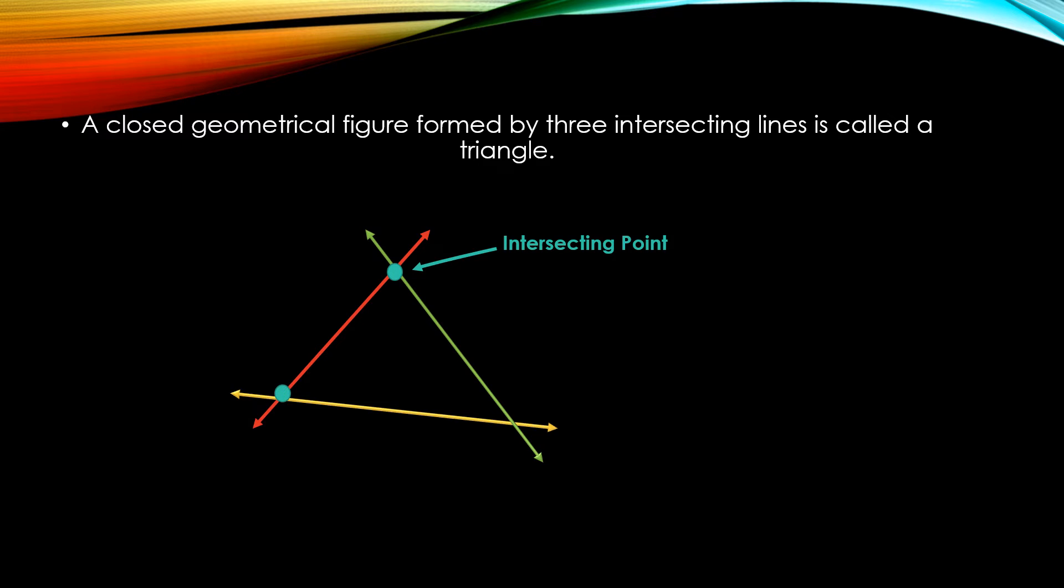Now, the red and yellow lines intersect here, and the green and yellow lines intersect here. So, the intersection points are known as vertices. The intersecting point is called a vertex.